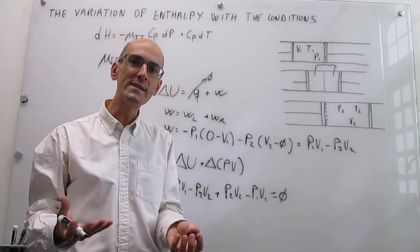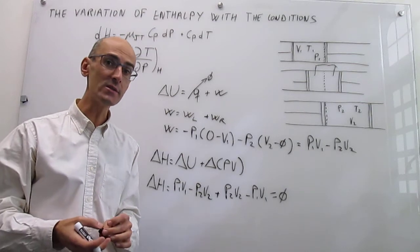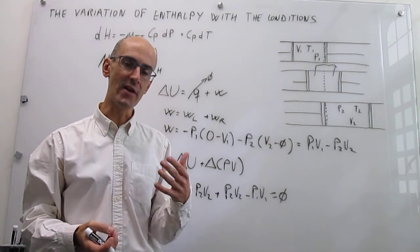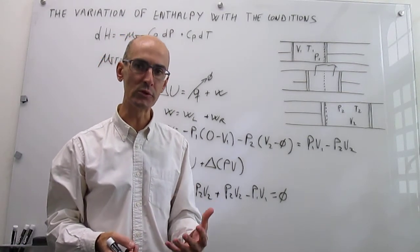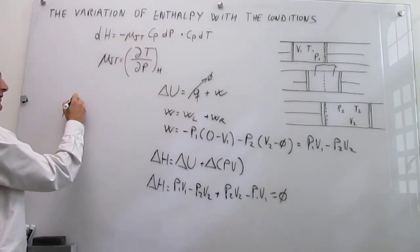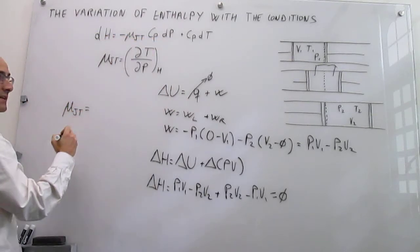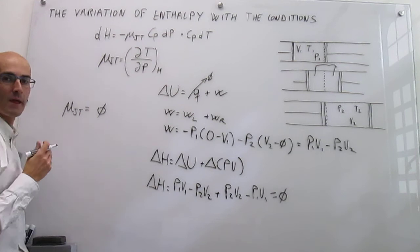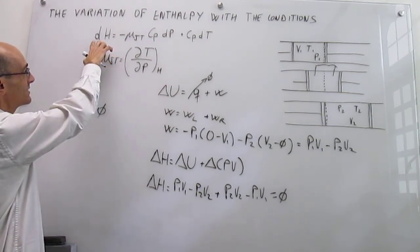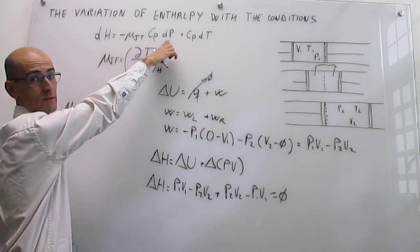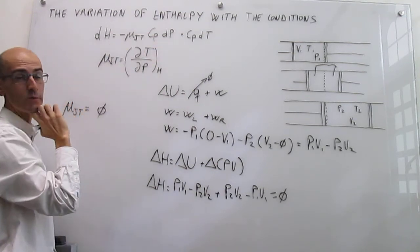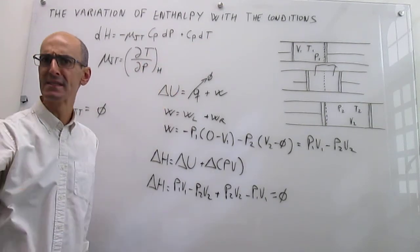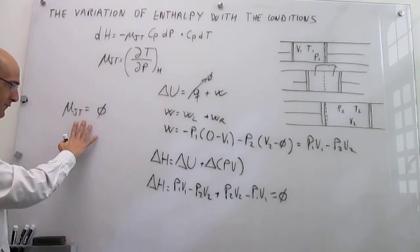The Joule-Thomson coefficient reports on the type of interactions that are dominant in the gas at those particular conditions. In an ideal gas, there are no interactions between gas particles, so the Joule-Thomson coefficient is completely zero. That means for an ideal gas the enthalpy does not depend on pressure, and the only dependence of enthalpy is on temperature, which is just the heat capacity at constant pressure.